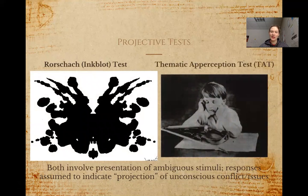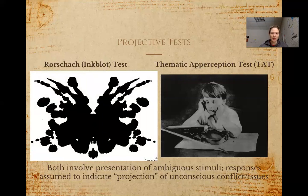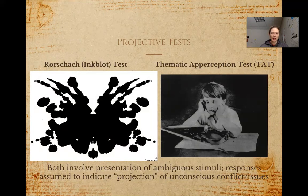The image you looked at earlier is an example prompt from the Thematic Apperception Test, or TAT, which has a similar style. Instead of inkblots, people are presented with images — usually ones with people in them — and asked to tell a story about what's going on. The idea is that people will be projecting as they do this, so the situations they bring up might reveal conflicts or things on their mind without them knowing. That's the perceived advantage: people can reveal things without self-censorship, since they don't know what their responses are revealing.